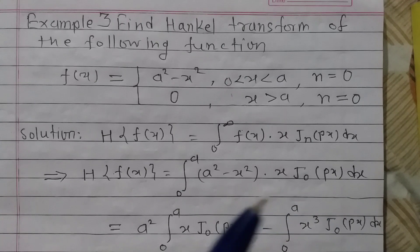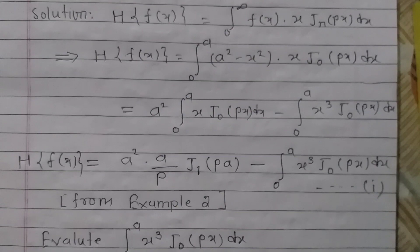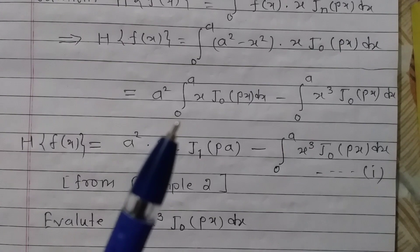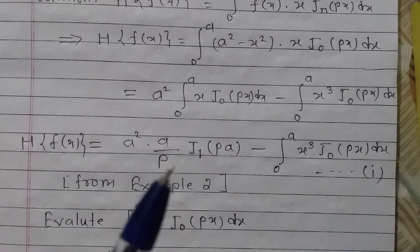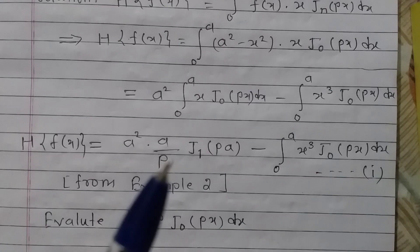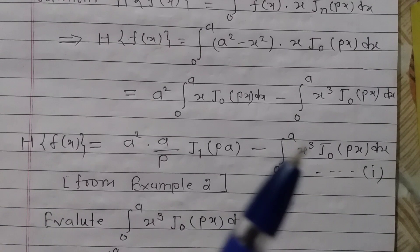Let us separate this integral into two integrals. The first integral is a² times the integral from 0 to a of x J₀(px) dx, minus the second one which is the integral from 0 to a of x³ J₀(px) dx. We have already calculated in the previous example the value of the definite integral from 0 to a of x J₀(px) dx, and it is a upon p times J₁(pa). So we know this value; now our work is to evaluate the integral from 0 to a of x³ J₀(px) dx.